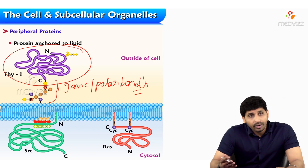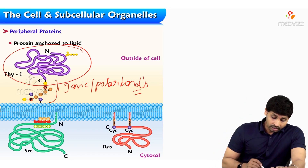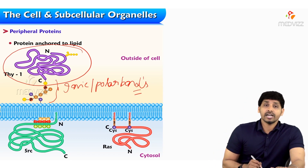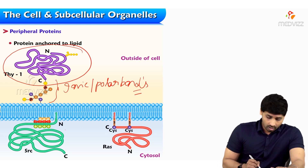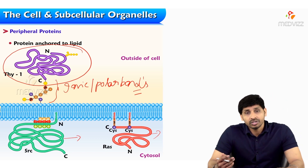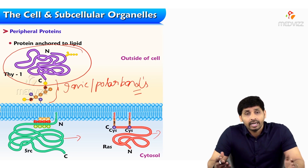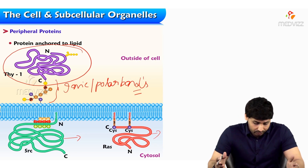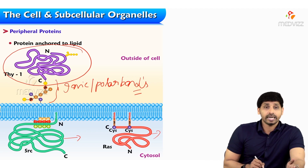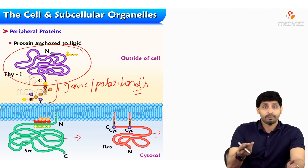Intrinsic proteins are present on the inner side of the membrane — shown in green color. They are in association with disulfide linkages and electrostatic interactions. Electrostatic interactions means plus and negative charges to the lipid.